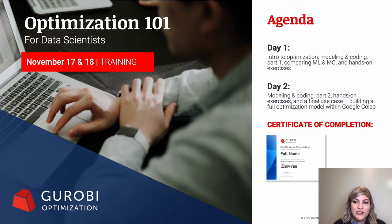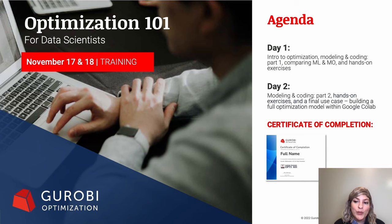All certificates will be issued the following day on December 2nd, so please be sure to complete the required sessions prior to that date if you'd like to receive a certificate of completion for Optimization 101. Unfortunately, with the limitations of the app, we won't be able to issue extensions for those who are unable to complete the training prior to December 1st.